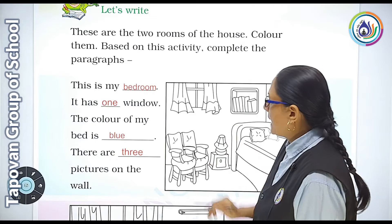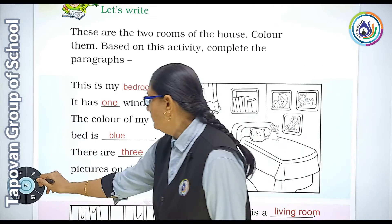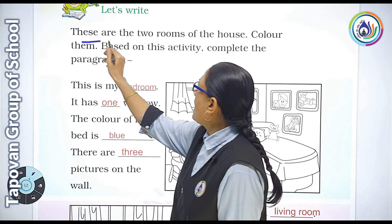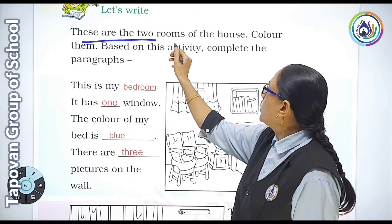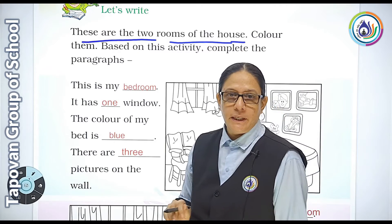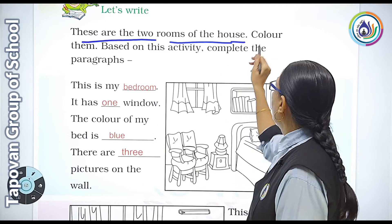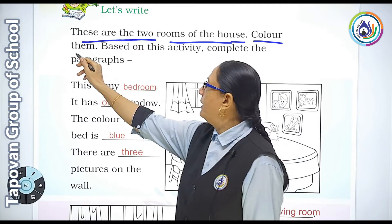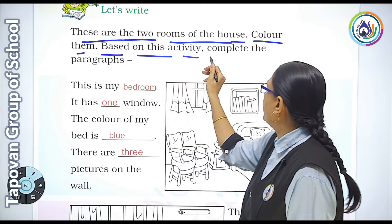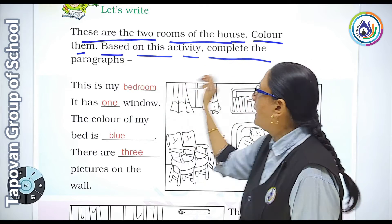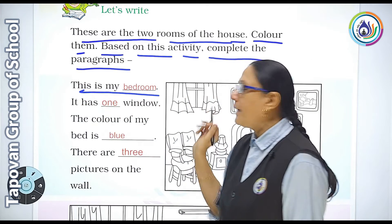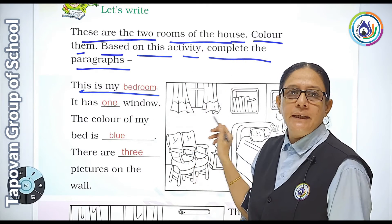Let's write. These are the two rooms of the house. Look at this picture and color the two rooms. Based on this activity, complete the paragraph.